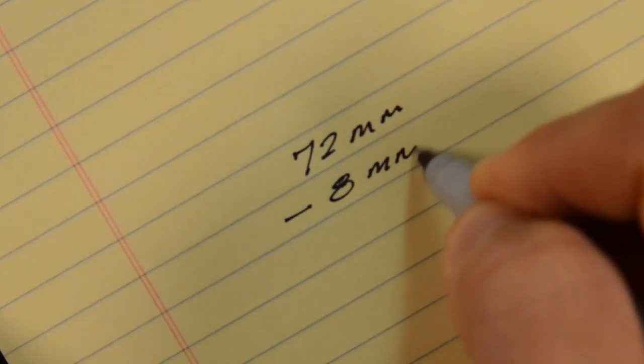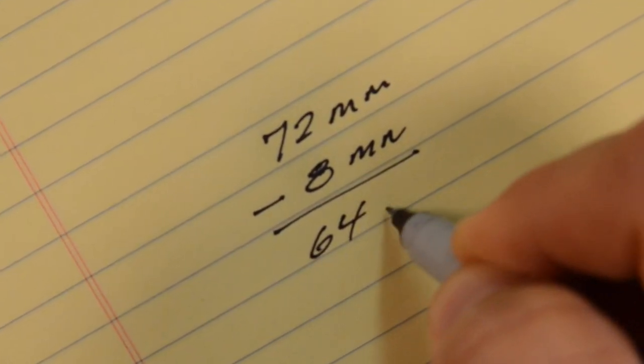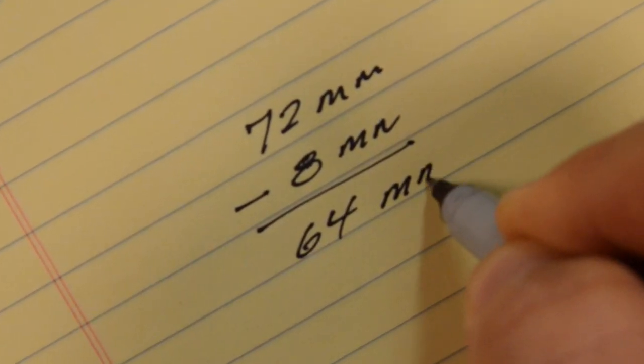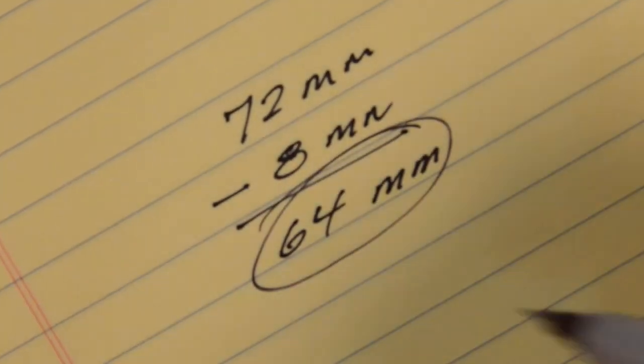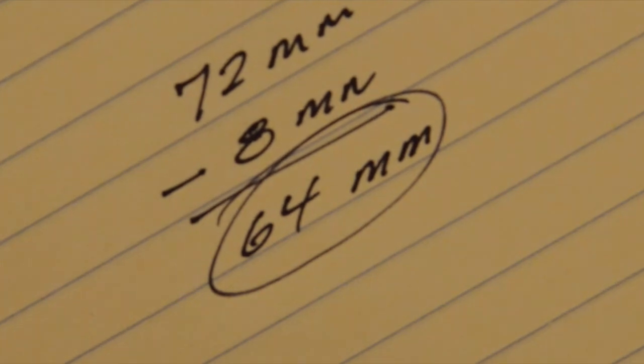Alternatively, you can subtract the radius or diameter of the hole from the overall measurement depending on whether you are measuring center lines between holes or the distance from the center of a hole to the edge of the board.